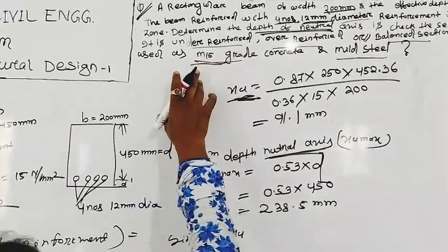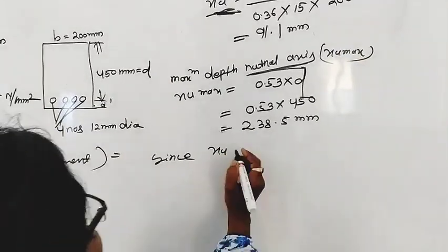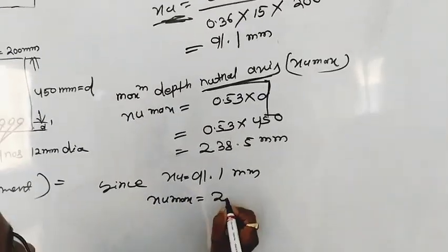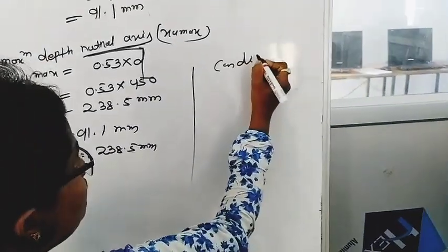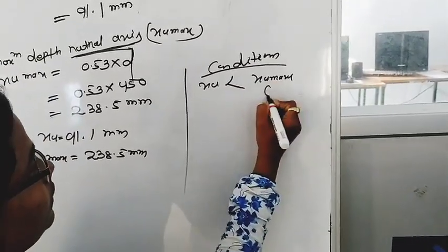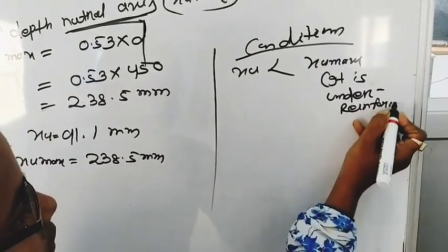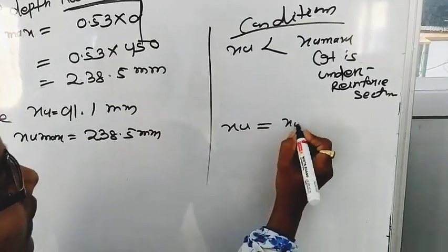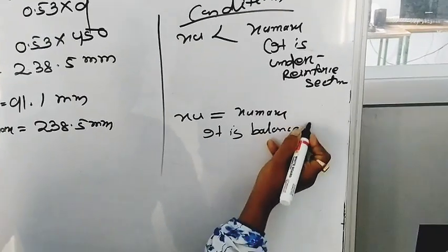We know that under-reinforced section or balanced section: XU is 91.1 mm and XU max is 238.5 mm. If XU less than XU max, it is under-reinforced section. If XU equal to XU max, it is balanced section.